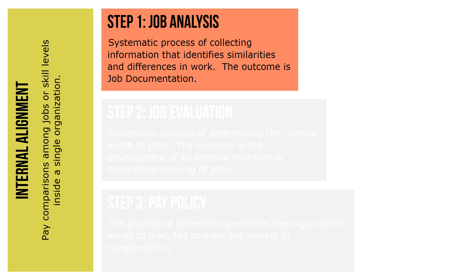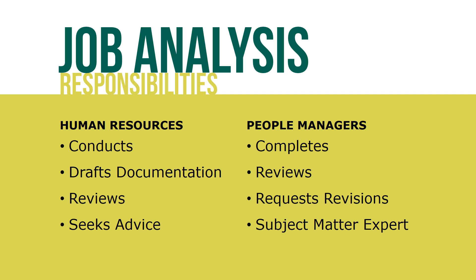Step one — job analysis — is part of the first functional area of activities in internal alignment. Job analysis is the systematic process of collecting information that identifies similarities and differences in work. The outcome of job analysis is job documentation. Job analysis requires a high degree of coordination and cooperation between human resource professionals and people managers. The assignment of responsibility depends on who can best perform the various parts of the process. In general, human resources and people managers have the following job analysis roles.